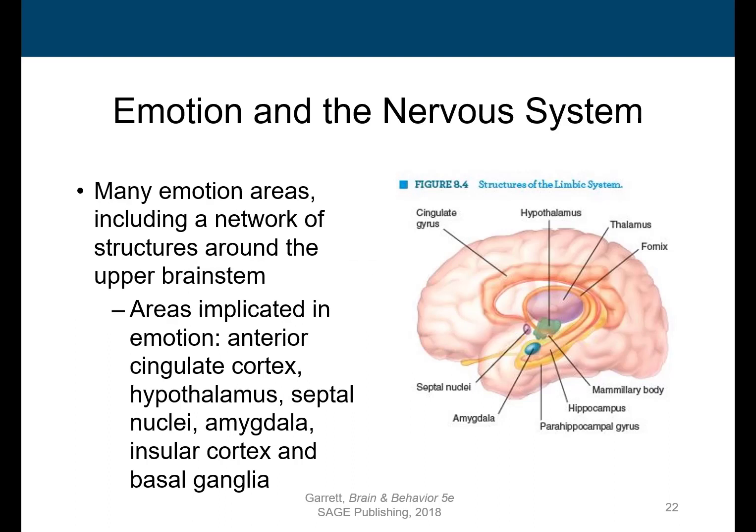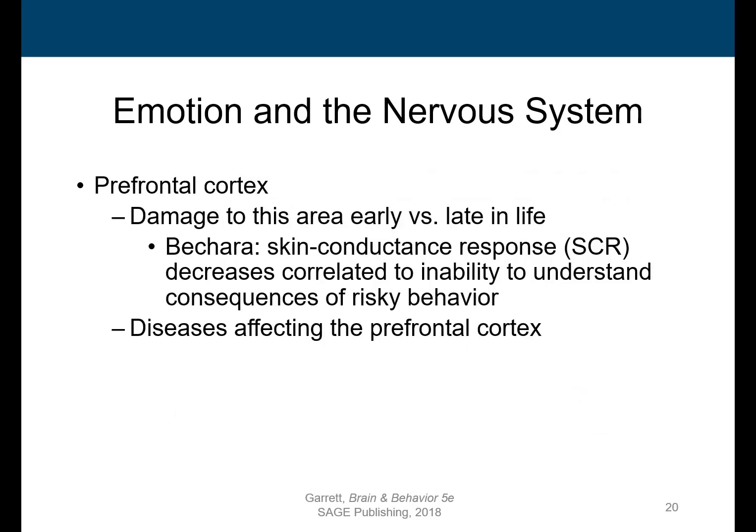The hypothalamus has primary control over the autonomic nervous system and is involved in the production of a wide variety of emotional expressions. Septal stimulation produces a sense of pleasure and arousal, and the amygdala plays a role in fear. Interestingly, the feeling of disgust is located in the insular cortex and the basal ganglia. The prefrontal cortex, the decision-making part of the brain, is also important in emotional processing.